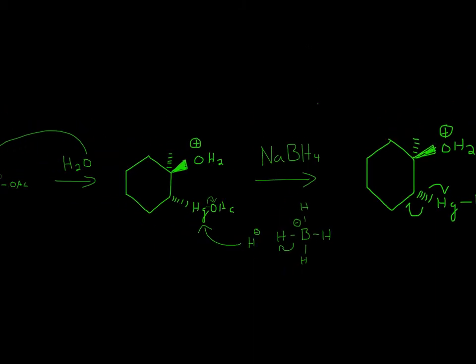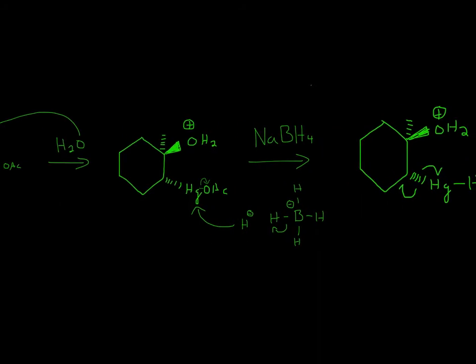Now for NaBH4, what it looks like is this, and what will happen is both of the electrons go to hydrogen to form hydride, because boron's stable on its own with six electrons, and this hydride will attack the mercury. So it'll attack the mercury, and the electrons will go to the oxygen.